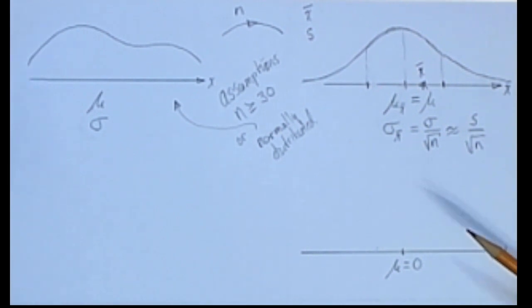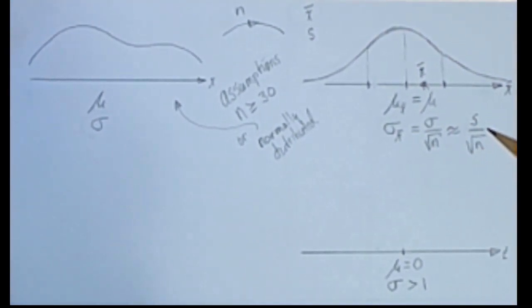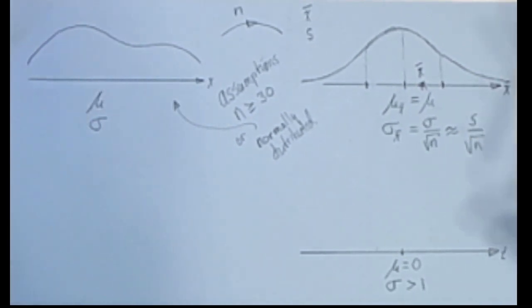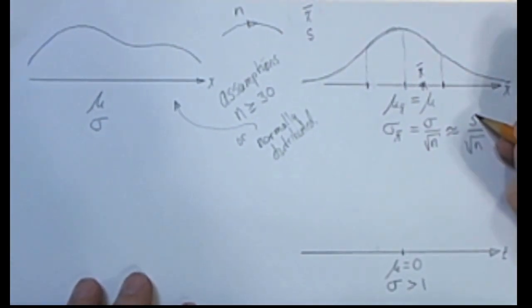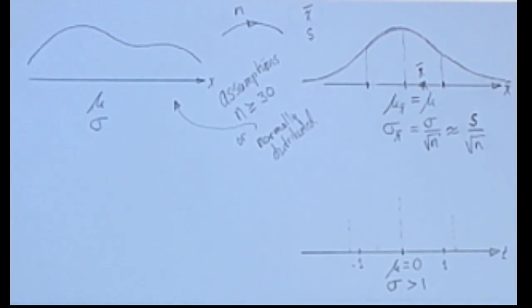A T distribution is much like a Z distribution. It has a mean of zero and a standard deviation that is something bigger than one. The reason for that is that we're trying to adjust for the fact that we must use this approximation. We can make a pretty reasonable sketch of a T distribution, because we know that the standard deviation is a little bit bigger than one, so it'll be concave down through this piece, and it'll be concave up outside of there.